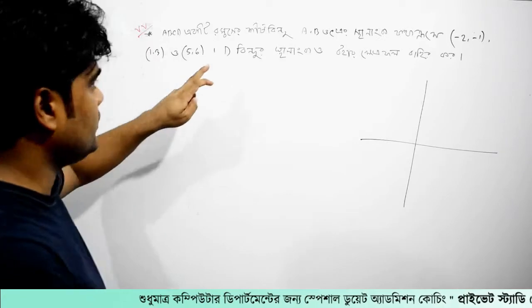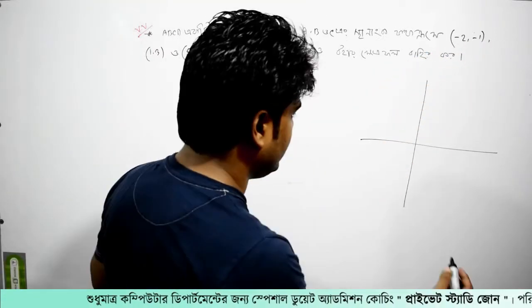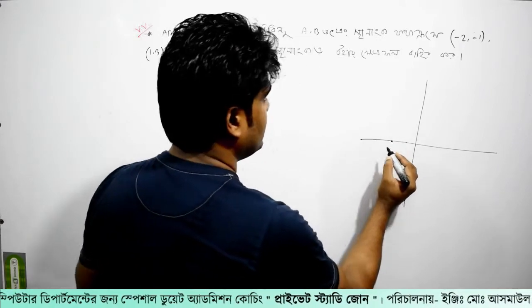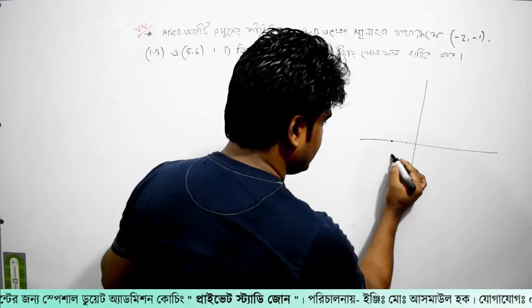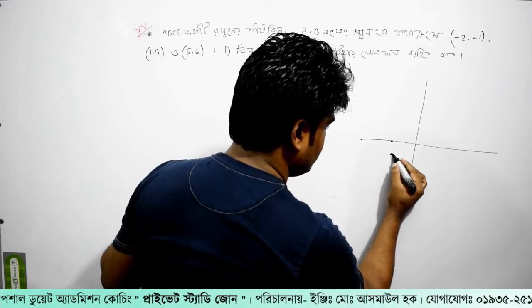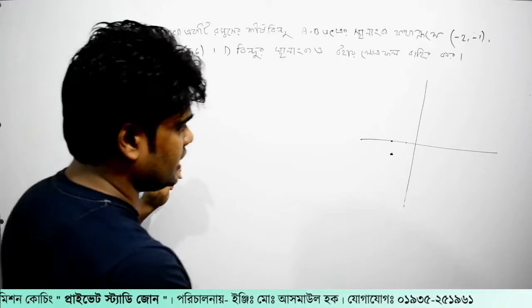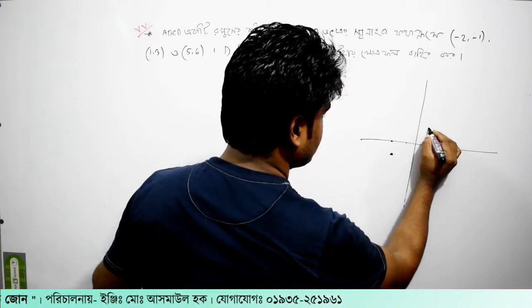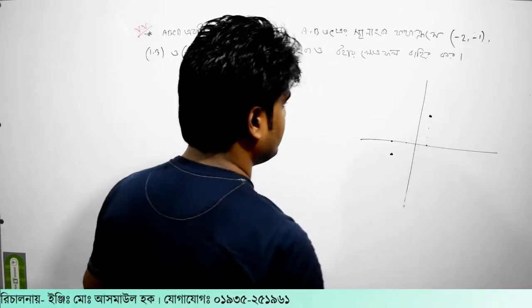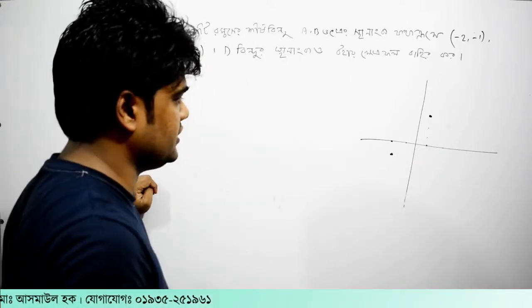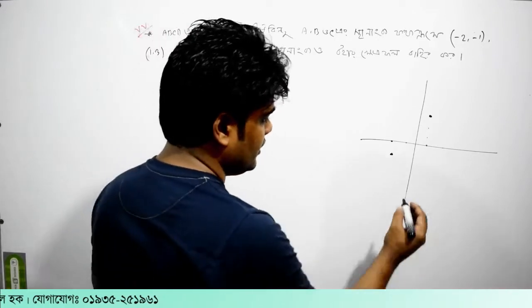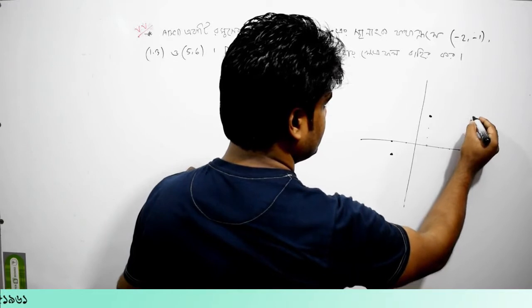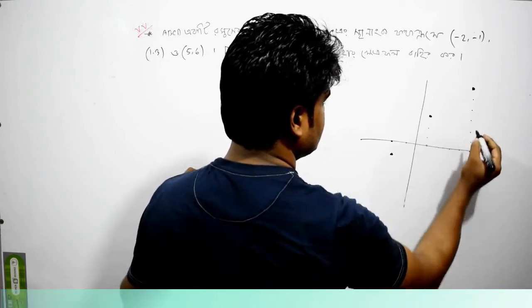This is a rhombus. A rhombus is a rhombus. This is 2. This is 5, 6. 5, 6. 1, 2, 3, 4, 5, 6. So 6 means 1, 2, 3, 4, 5, 6. Okay.